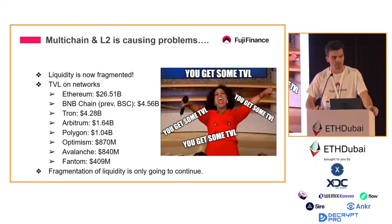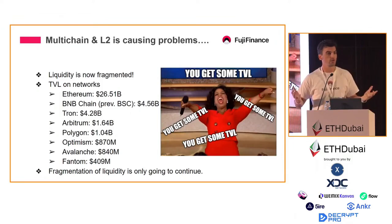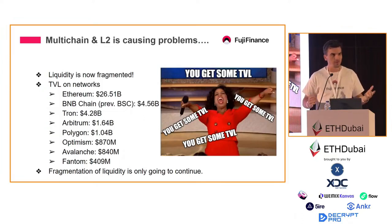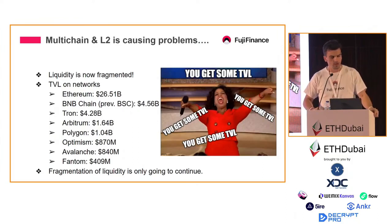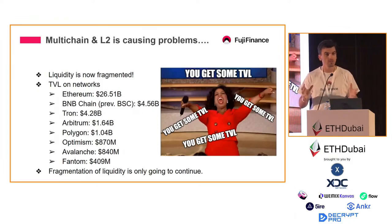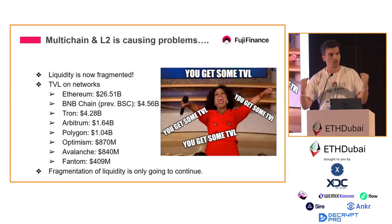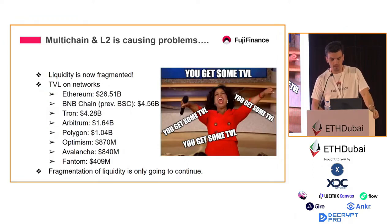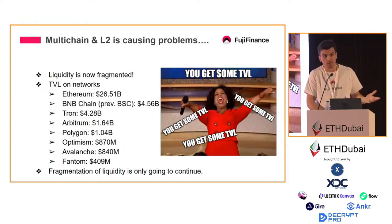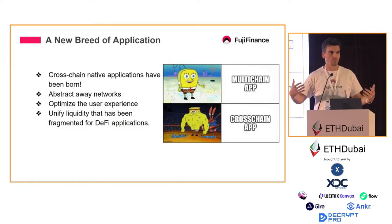With the multi-chain thesis and L2s, liquidity has now been fragmented. If you're a user building around DeFi it can get hectic, especially with significantly larger amounts of capital. Liquidity is now separated across different silos on all these different networks — Ethereum, BNB Chain, Tron, Arbitrum, Optimism, Polygon, Avalanche, Fantom — all have their own isolated ecosystems that can't communicate with one another. As new L2s can be deployed permissionlessly, this fragmentation is only going to continue.